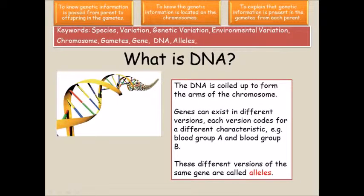There is such variety in the human population that obviously not all genes are the same, and these genes can come in various different types. A different version of a gene is sometimes referred to as an allele. Generally speaking, you have two alleles that represent a single gene, and we will come on to look at the relationship between these alleles in a later video.